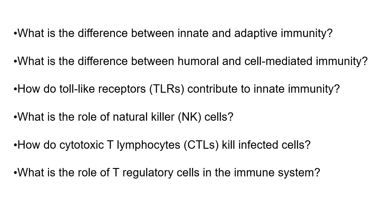What is the role of natural killer cells and T lymphocytes? NK cells provide rapid responses to virally infected cells and tumors by inducing apoptosis without prior sensitization. How do cytotoxic T lymphocytes (CTLs) kill infected cells? CTLs recognize and bind to infected cells via T cell receptors and release perforins and granzymes to induce apoptosis in the targeted cell. T regulatory cells maintain immune homeostasis by suppressing immune responses and preventing autoimmunity.